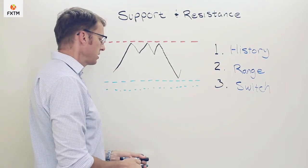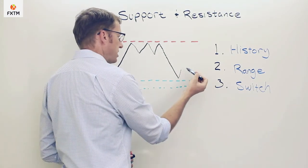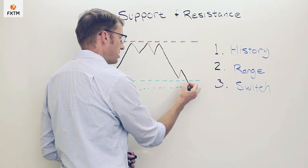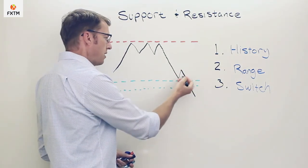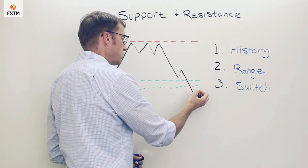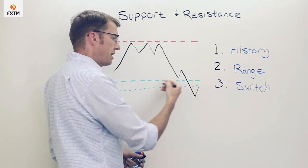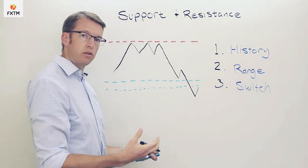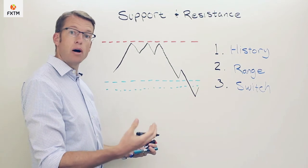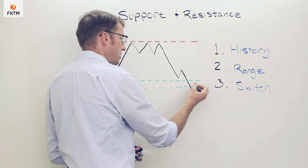Finally, we know that if the price eventually does invalidate a particular price level—so in this case let's say support is broken and then returns back to it from underneath, or in the case of a broken resistance level returns back to that resistance level from up above—that it's likely to take on a different role.